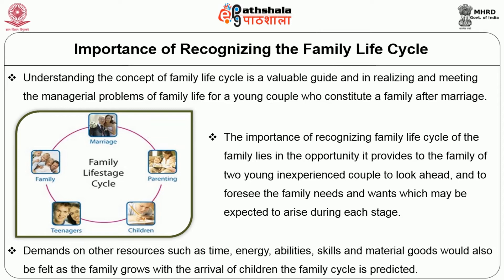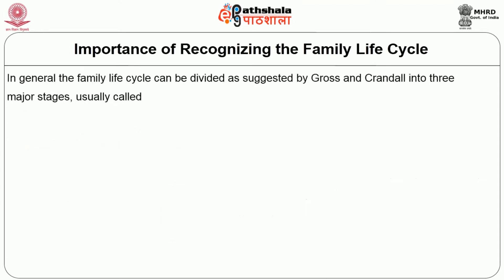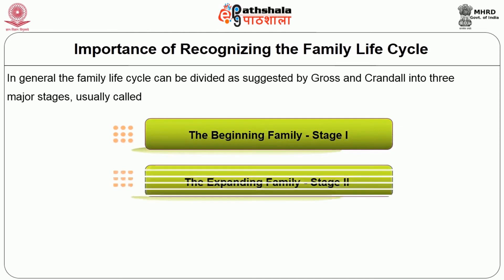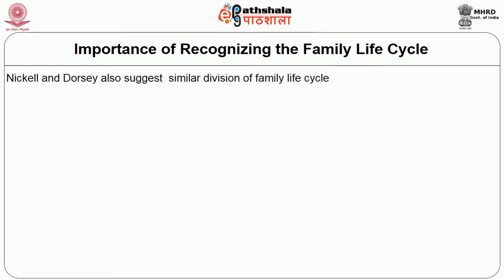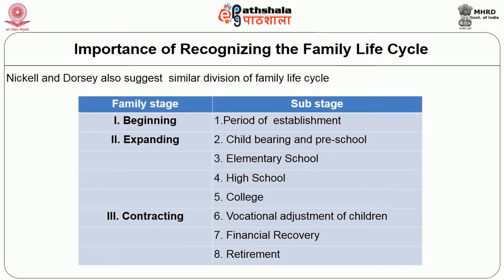With the arrival of children, the family life cycle is set in motion. In general, the family life cycle is divided, as suggested by Gross and Crandall, into three major stages: stage 1 is the beginning family, stage 2 is the expanding family, and stage 3 is the contracting family. Nickell and Dorsey also suggest a similar division into stages and sub-stages. In the beginning stage, the sub-stage is the period of establishment. In the expanding stage, the sub-stages are childbearing and preschool, elementary school, high school, and college. In the contracting stage, the sub-stages are post-parental adjustment of children, financial recovery, and retirement.